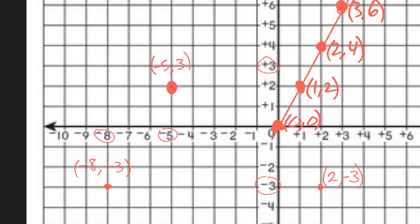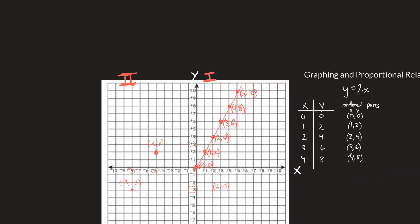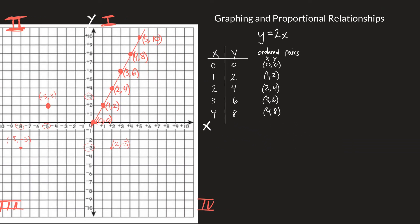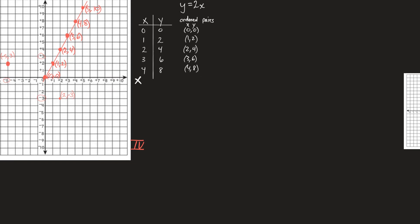So there's some information on graphing points: we start with the equation, build a table, use those table values as ordered pairs, plot those ordered pairs, and draw a straight line. I have one more example.